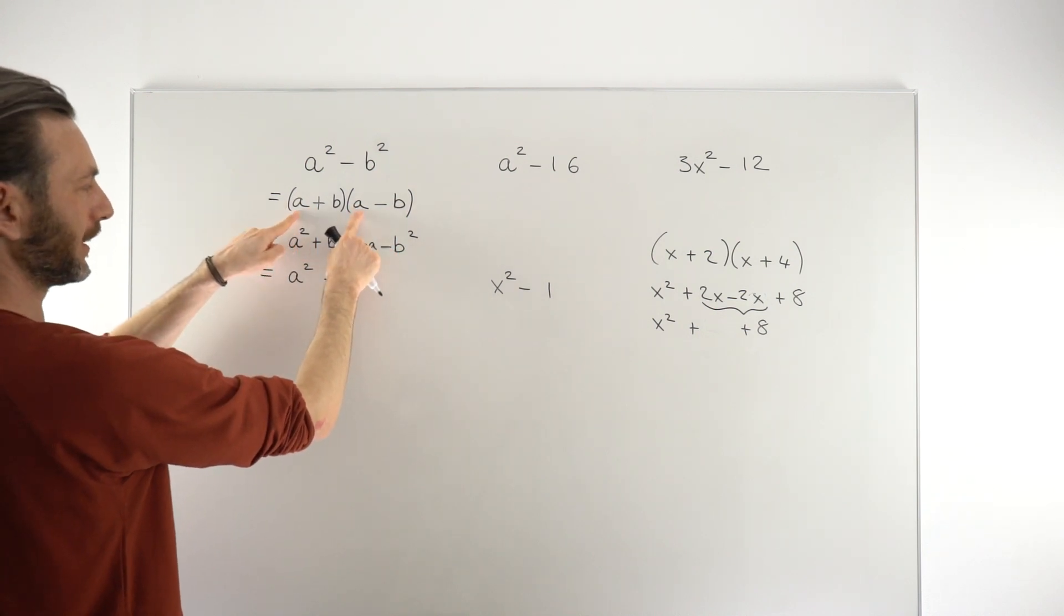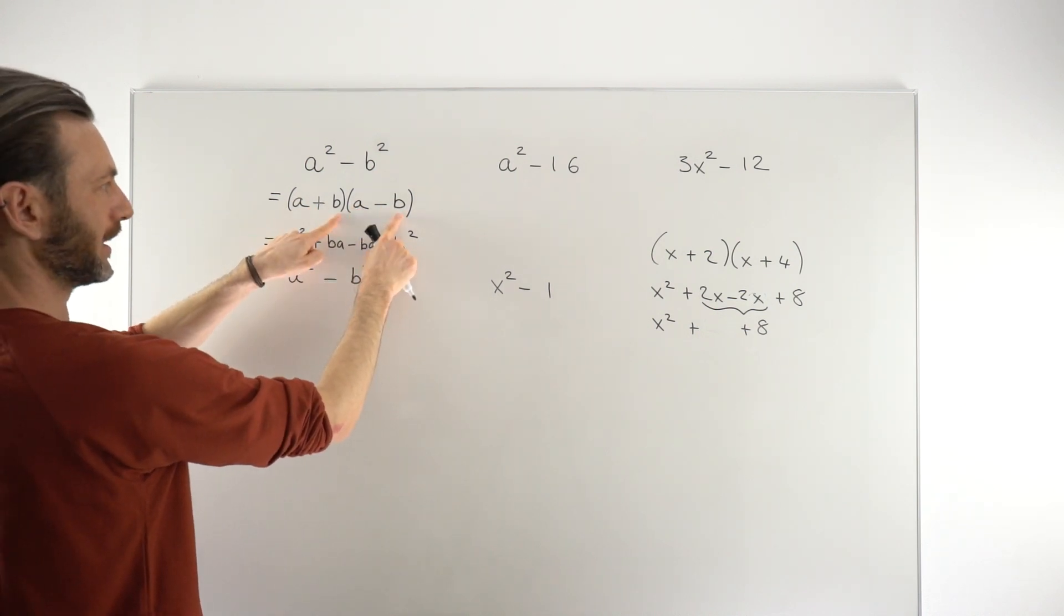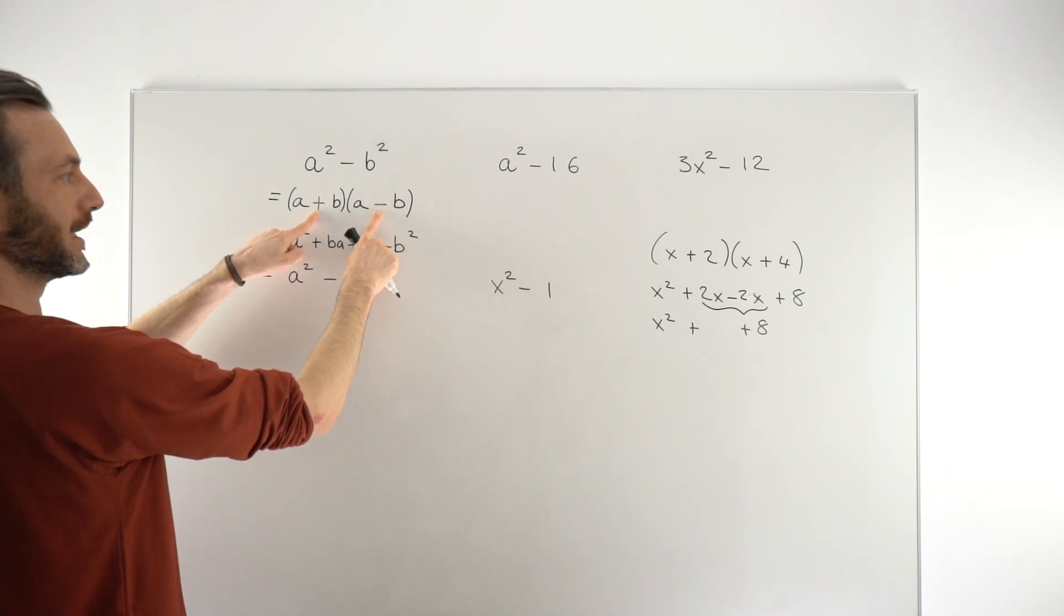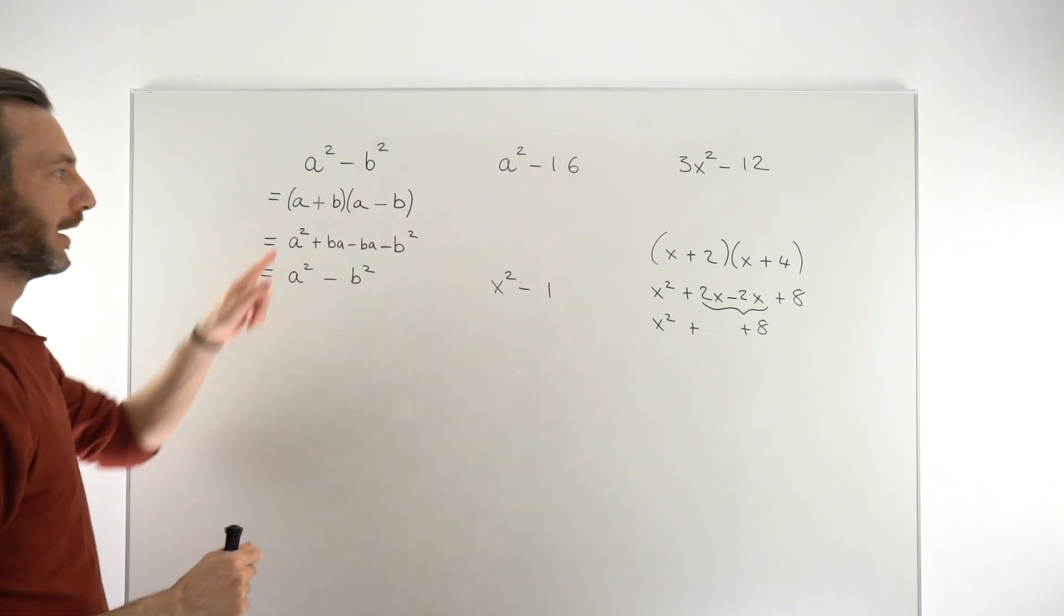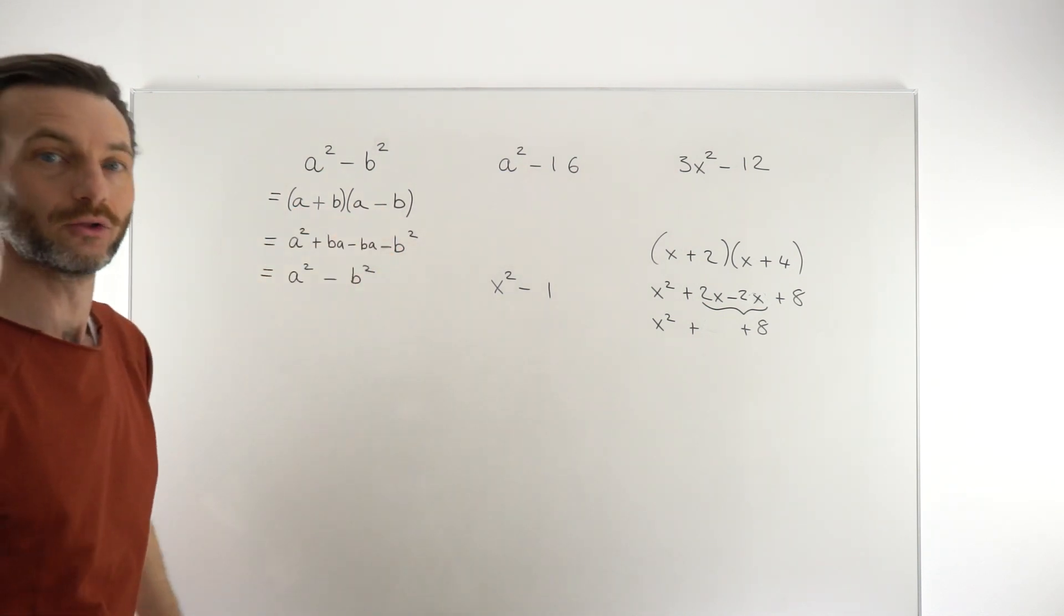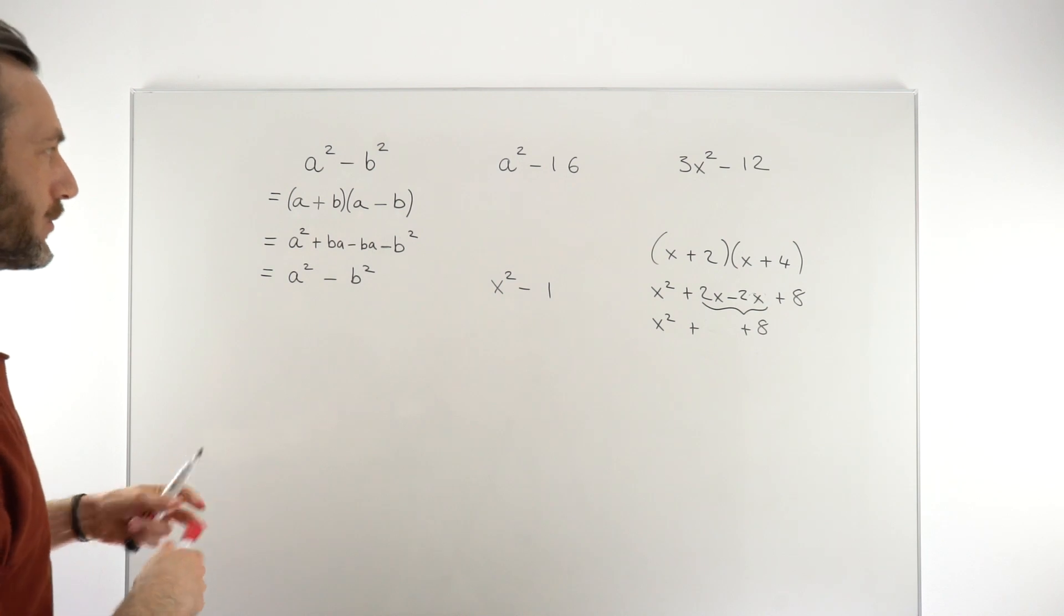These guys have to be the same. These guys have to be the same. And these guys have to be a plus and a minus. Doesn't matter the order, it could be plus minus or minus plus. But that is always the format you're looking for in a difference of squares.